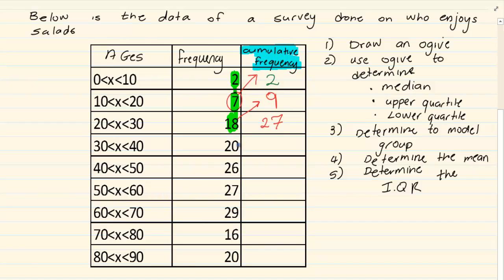How would I get the next one? I would say 27 plus 20 which gives me 47. Then I would continue 47 plus 26 which equals 73. Then 73 plus 27 which is 100, 100 plus 29 is 129, 129 plus 16 is 145, 145 plus 20 is 165.